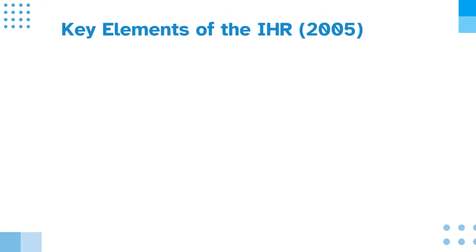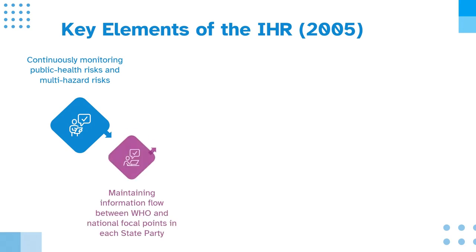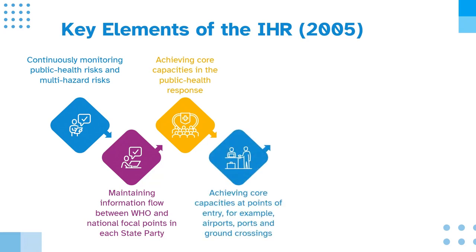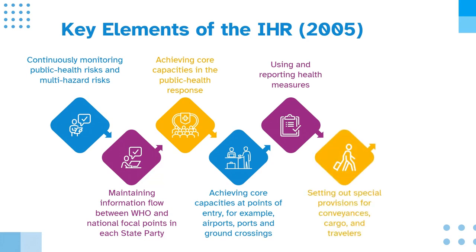Key elements of the IHR 2005 are: continuously monitoring public health risks and multi-hazard risks; maintaining information flow between WHO and national focal points in each state party; achieving core capacities in the public health response; achieving core capacities at points of entry, for example airports, ports and ground crossings; using and reporting health measures; setting out special provisions for conveyances, cargo and travellers.